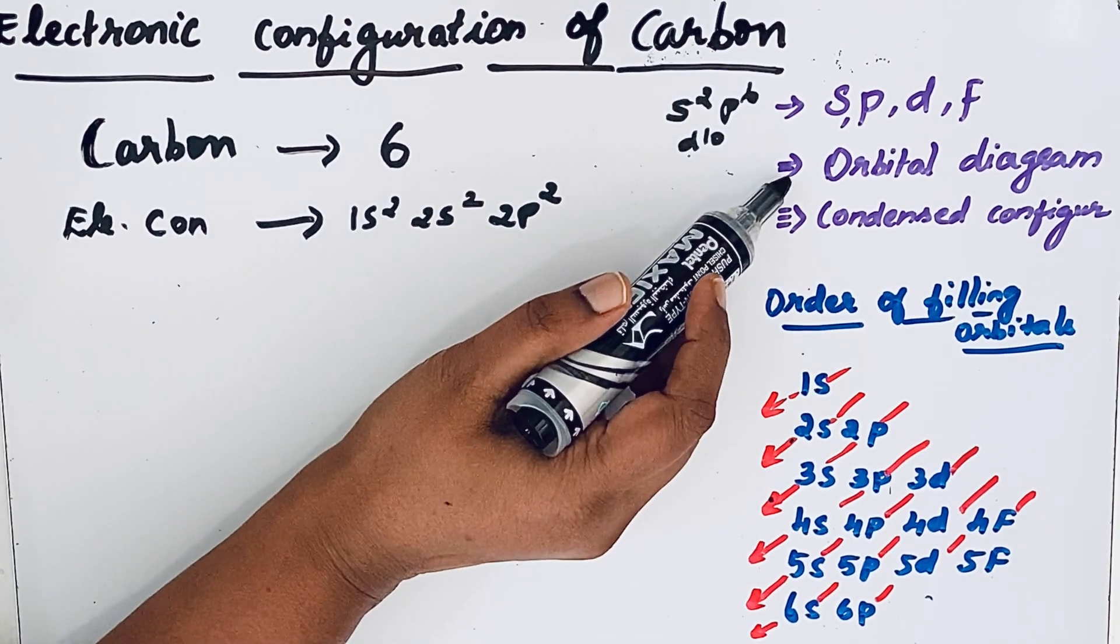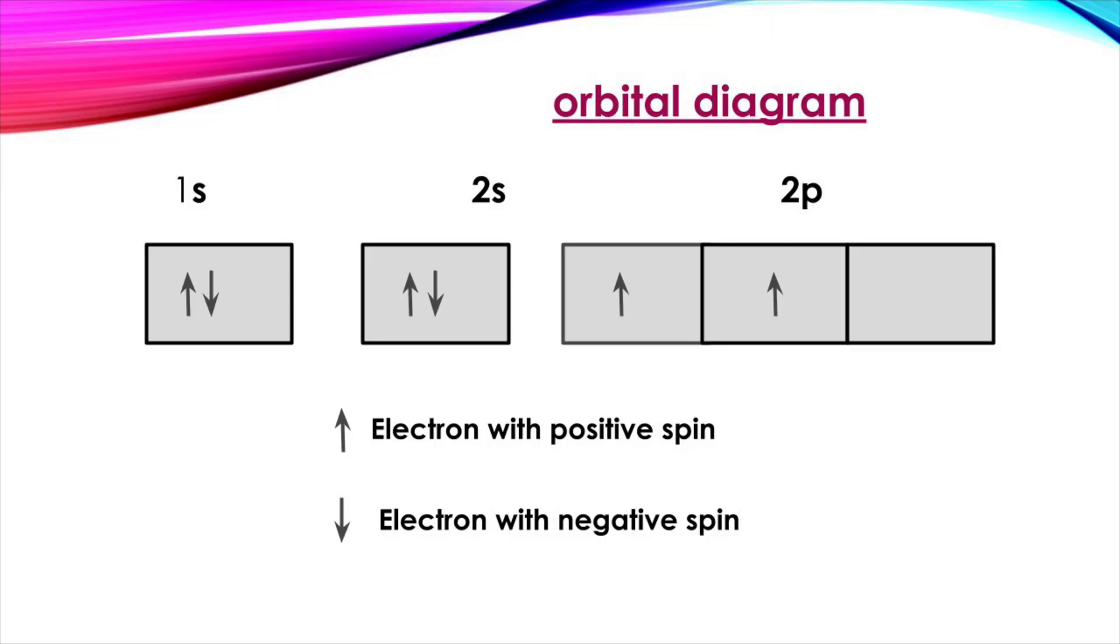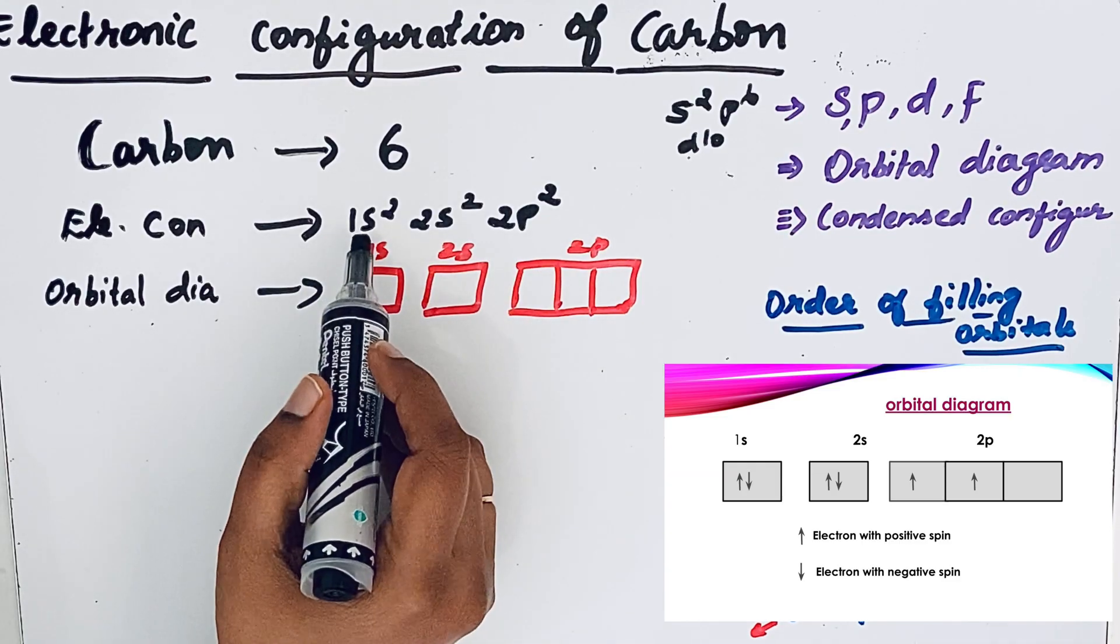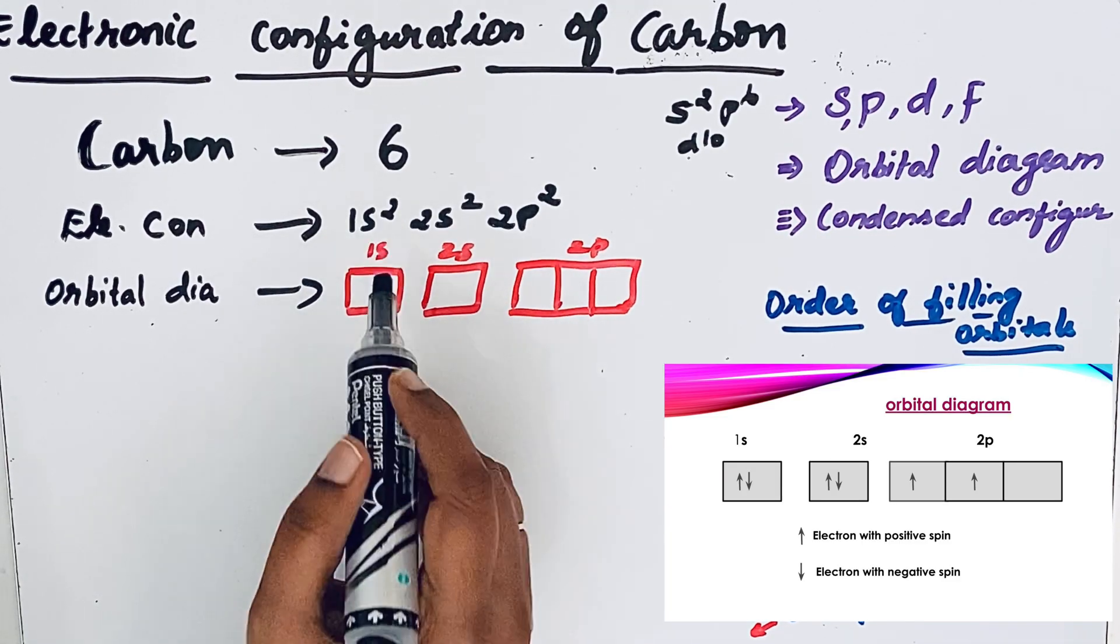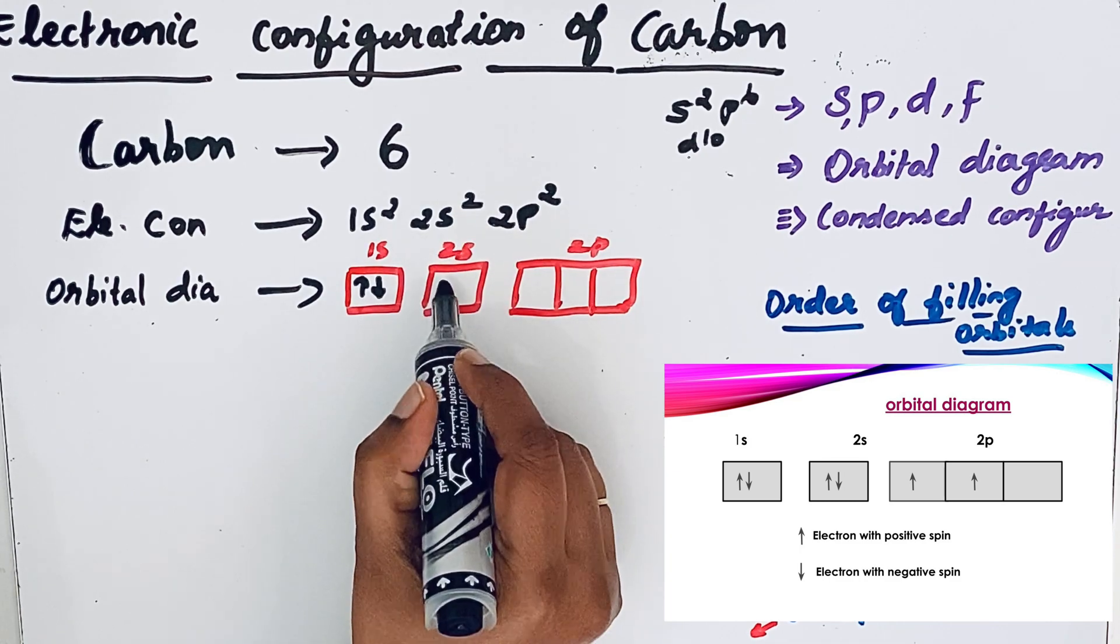Now we will write that orbital diagram. In orbital diagram, each orbital is represented as a box and the electrons are represented as an arrow. For example, see here 1s2, 2 electrons. This orbital also 2 electrons.